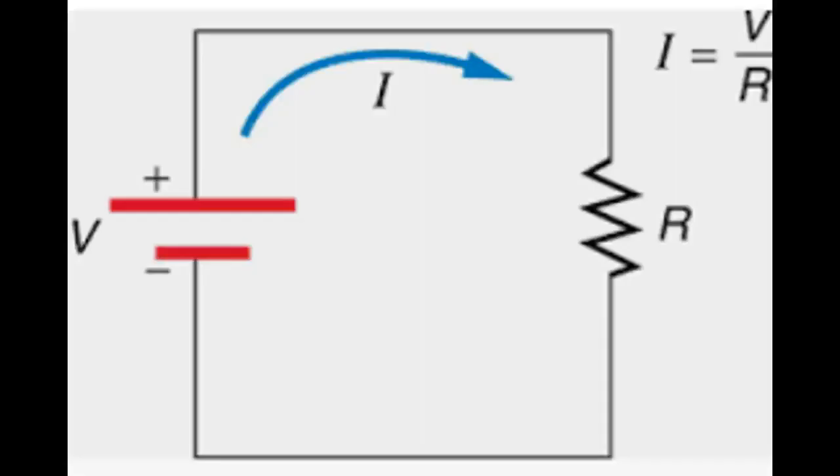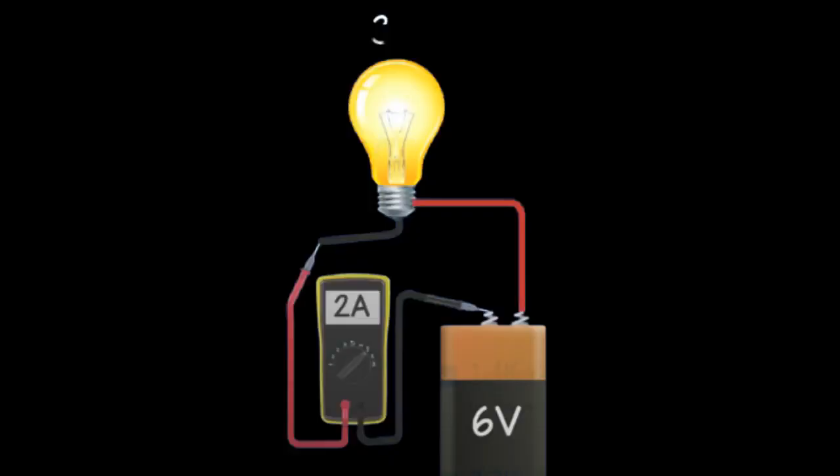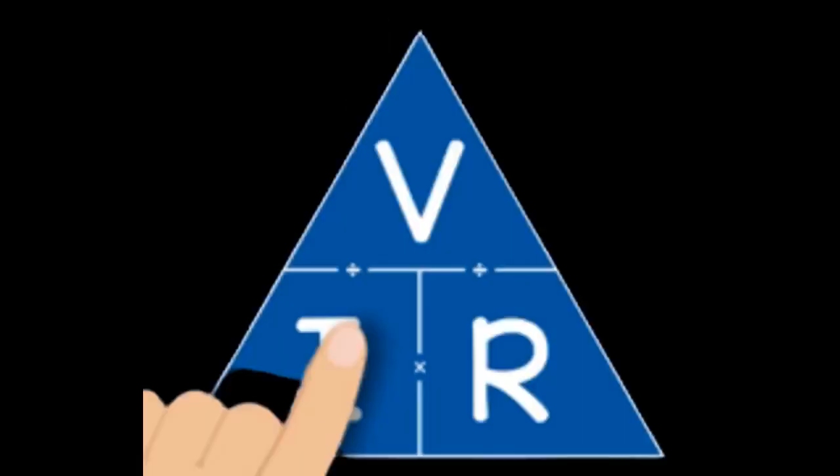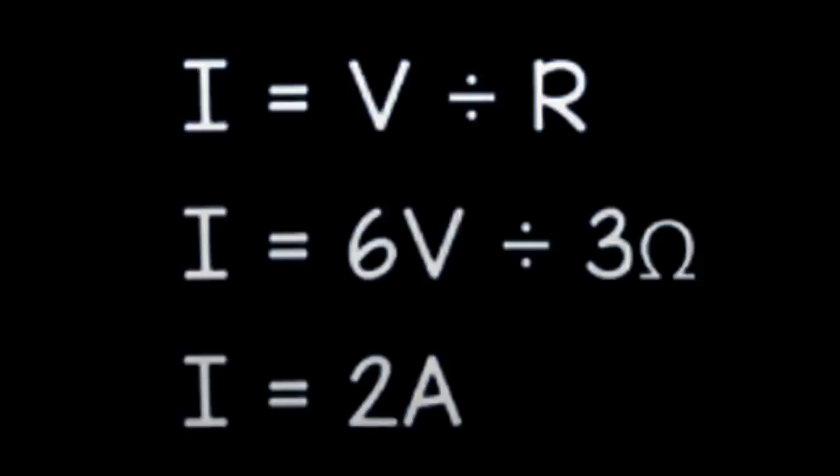Let's say we have a 3-ohm lamp connected to a 6-volt power supply. To find the current, we write I and then cover it up in the triangle. This yields V divided by R, implying that current equals voltage divided by resistance. We know the voltage is 6 volts and the resistance is 3 ohms, so the current must be 2 amps, which we can see on the multimeter.